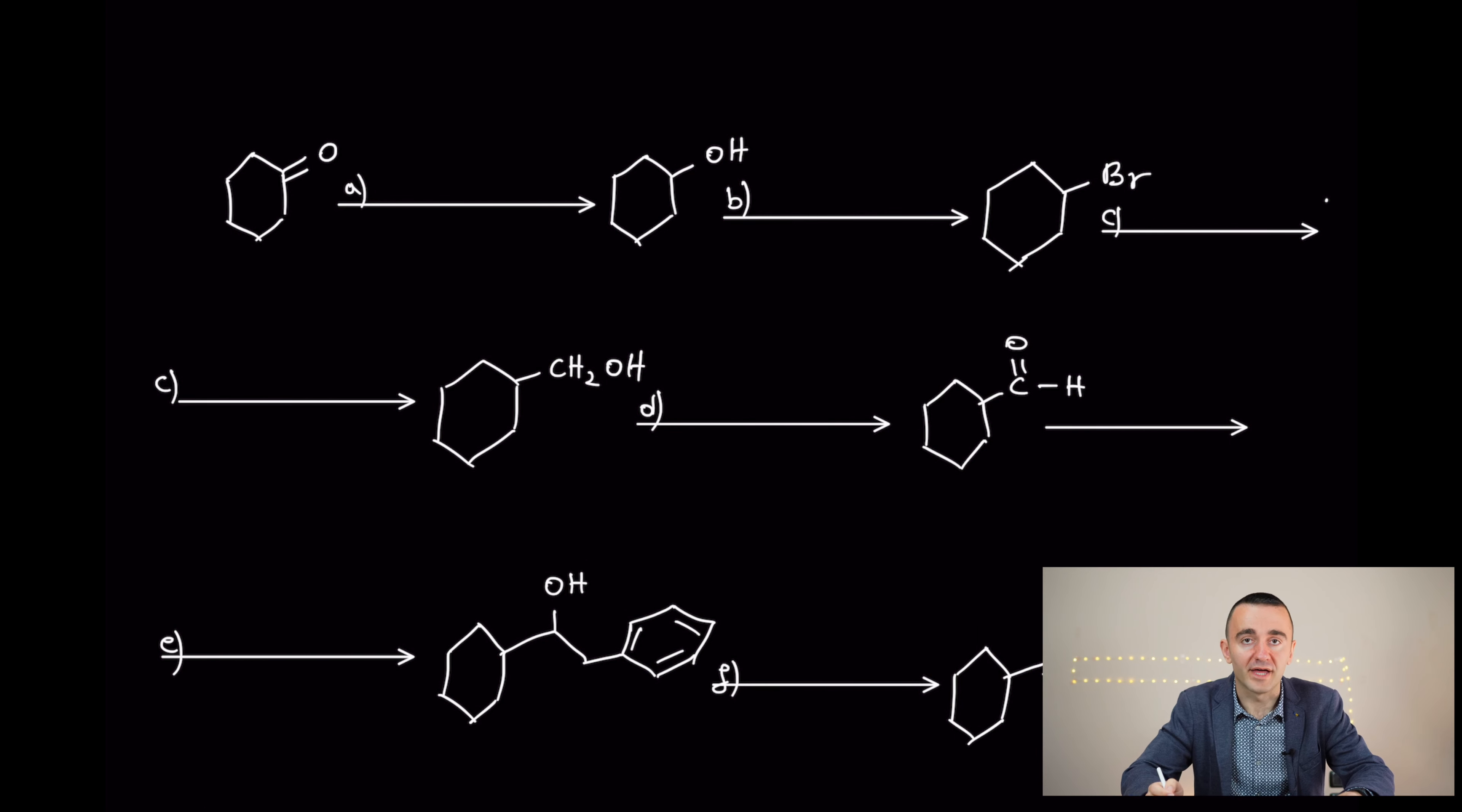From the ketone to go to the alcohol. What is this process? This is a reduction. What we did? How we did that? We had two options. Sodium borohydride and lithium aluminum hydride. In this case, both of them work. So let's treat that with sodium borohydride.